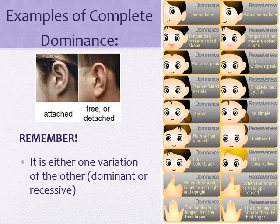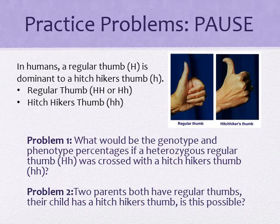So let's talk about our first example problem. In humans, a regular thumb is denoted by this photo here, whereas a hitchhiker's thumb — the recessive variant — can be found here. As you can see, the hitchhiker's thumb has a clear bend in the back. The regular thumb can be found as either capital H capital H, or capital H lowercase h, because the regular thumb is dominant. The hitchhiker's thumb is recessive, and the only way you can have a hitchhiker's thumb is if you have the homozygous recessive condition: lowercase h, lowercase h.